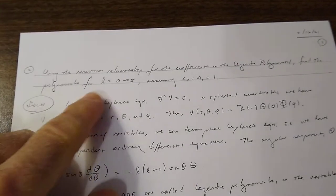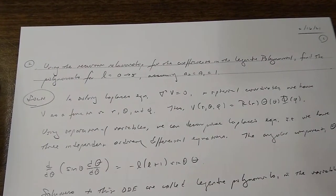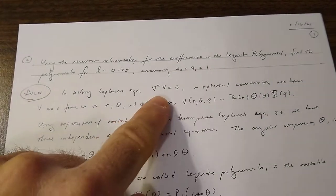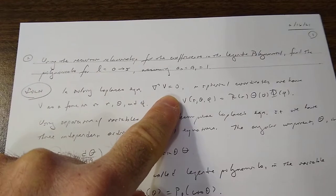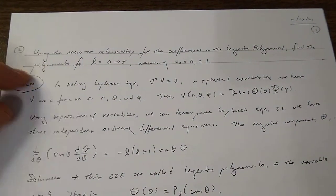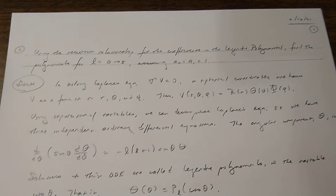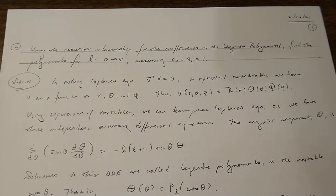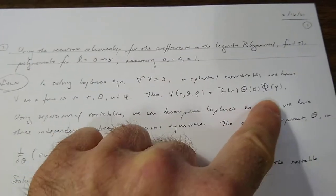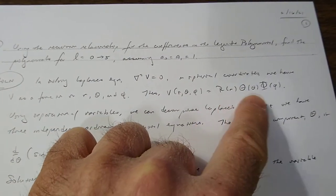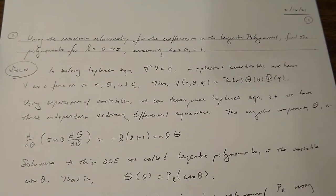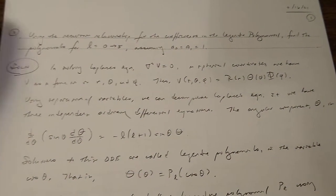We're going to be looking at the Legendre polynomials from 0 to 5. Basically what happens is that you're solving the Laplace equation — del squared of the potential equals 0 — in spherical coordinates. So you get your potential as a function of radius, polar angle theta, and azimuthal angle phi. You use it in this form because you want to use separation of variables for solving this second order differential equation.